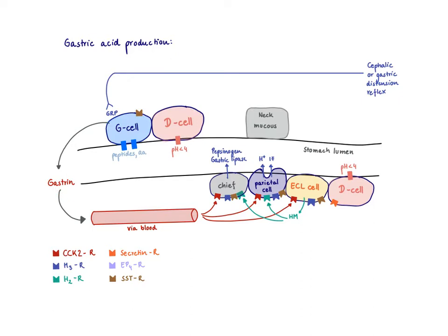We will also get gastrin released when there's a gastric distension reflex, and also when there is partly digested food reaching the G cell, because there are receptors on the G cells for peptides and amino acids that can also stimulate the gastrin release.